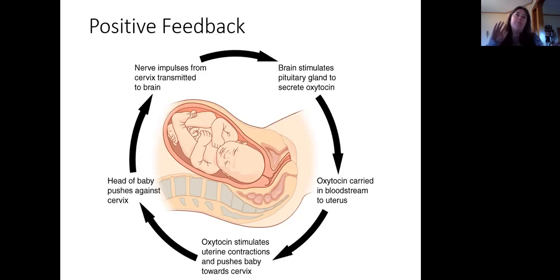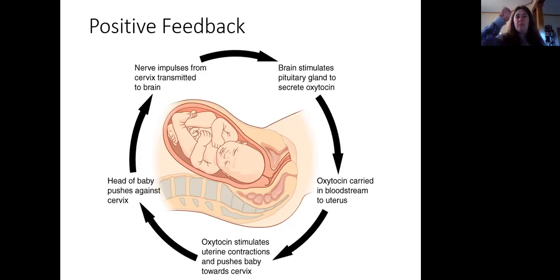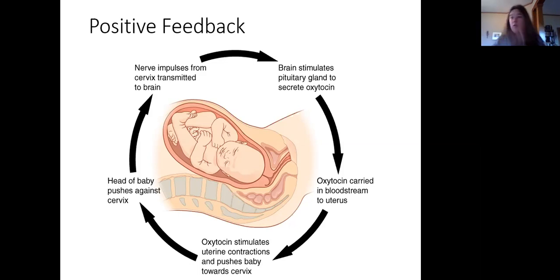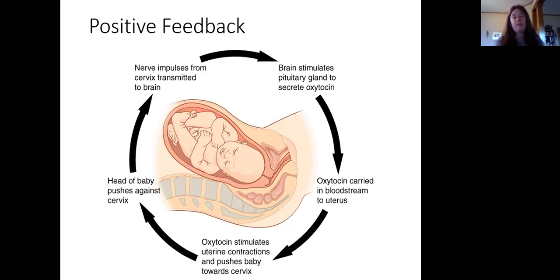Those contractions will then push the head of the baby harder against the cervix, which sends another signal back to the brain, which then sends more signals down to the pituitary to release more oxytocin, which causes more contractions, which causes more pressure on the cervix, which causes more signal to the brain, which causes more oxytocin. And it goes around and around and escalates until the baby is born. Once the baby is born, there's no longer that pressure on the cervix, and the cycle stops.